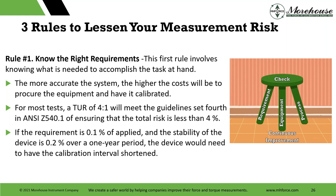ANSI Z540.1 would ensure that the total risk — two sides to each tail of a normal probability distribution — is less than 4%. My other note: if the requirement is 0.1% of applied and the stability of a device is 0.2% over a one-year period, anyone think that's going to be good? We see this quite a bit — customers send stuff in and say they want adjusting if it doesn't meet 0.1%, and the PFA is higher than 2%.